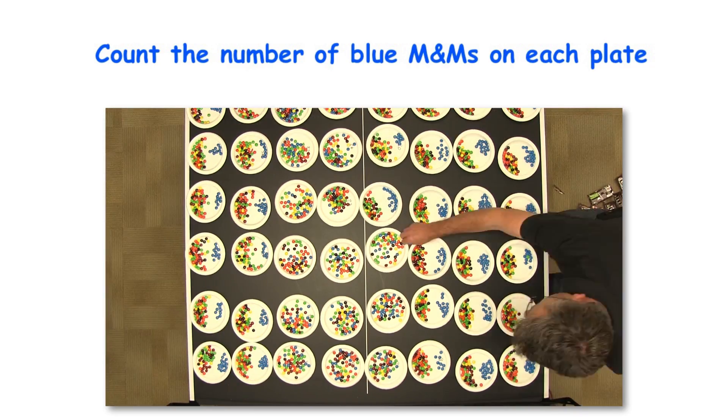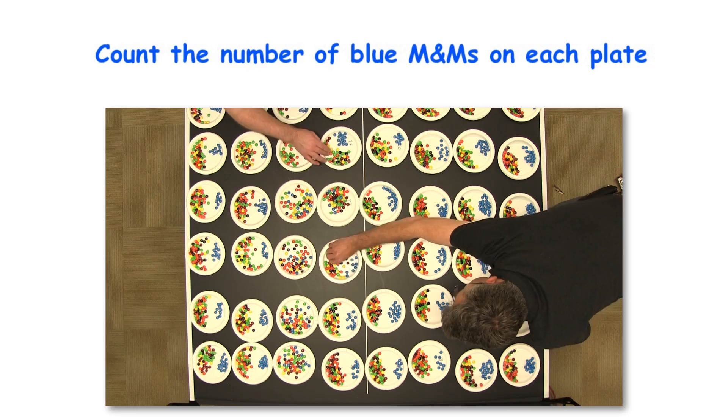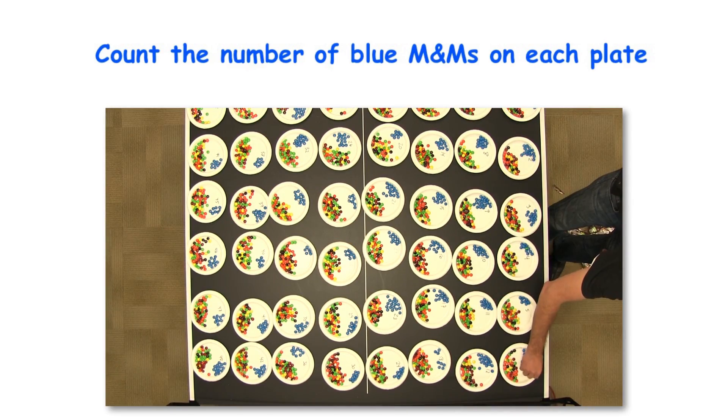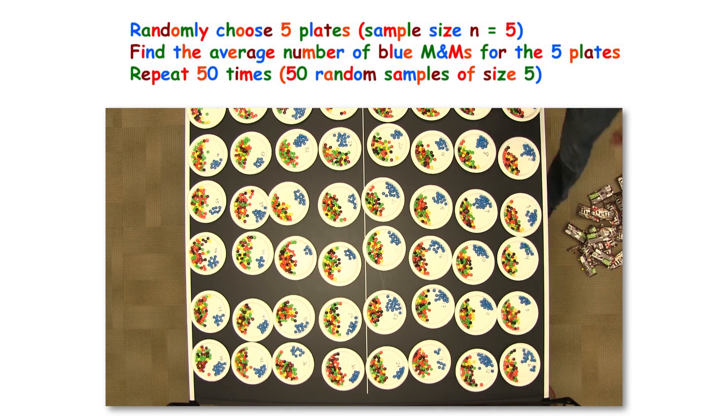Once we have the blue M&M's sorted, we're going to be interested in the average number of blue M&M's per bag, or per plate in this case. And what we're going to do then is take random samples of N equals 5, and compute an average.